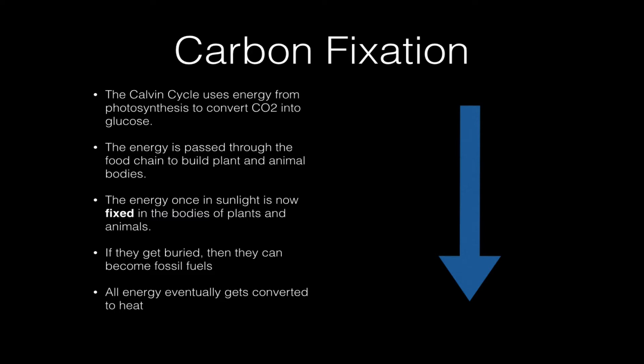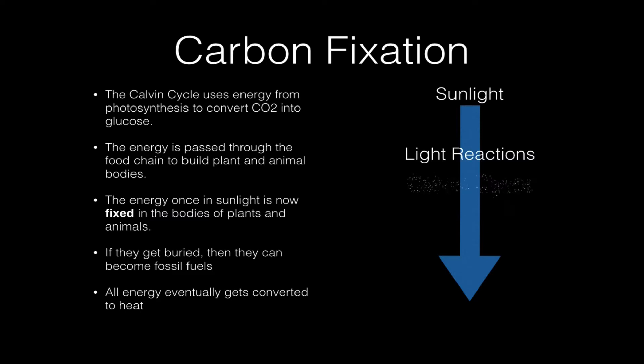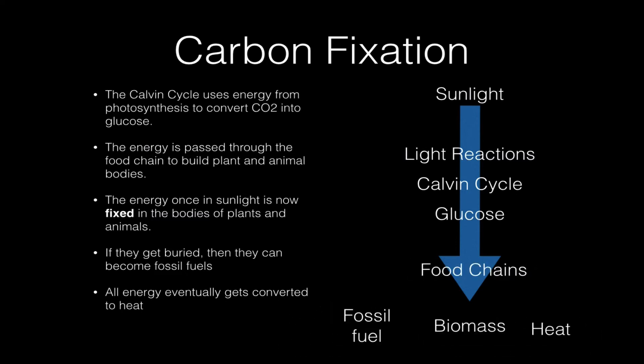Let's look at this idea again in a more graphic way. All the energy starts as sunlight. Photosynthesis absorbs the sunlight in the light reactions and passes some of that energy to the Calvin cycle. The Calvin cycle makes glucose, which then passes through food webs and food chains and can end up in three places.